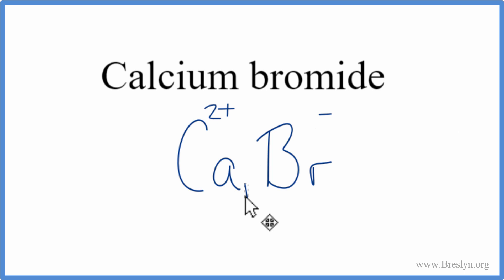We can take the 1 here, cross it here, and then cross the 2 over here. We don't usually write the 1, so we'll get rid of that, and let's get rid of these charges as well. And that's the formula for calcium bromide, CaBr2.